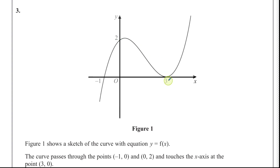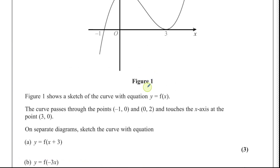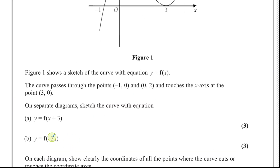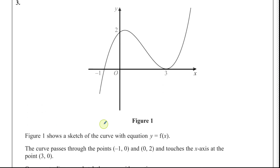The curve touches the x-axis at the point 3, 0. On separate diagrams, sketch the curve with the equation y equals f of x plus 3 — so y equals f bracket x plus 3 inside the bracket — and also y equals f of negative 3x. On each diagram, show clearly the coordinates of all the points where the curve cuts or touches the coordinate axes.